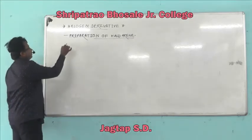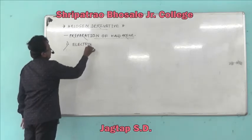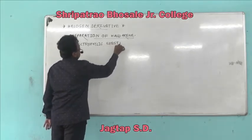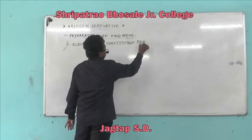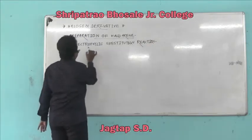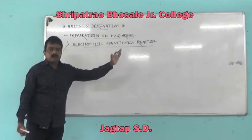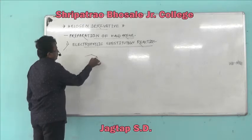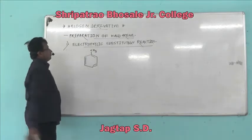First of all, we consider the Electrophilic Substitution Reaction. In the first method, Electrophilic Substitution Reaction of Monosubstituted Benzene. Monosubstituted benzene is the compound obtained by replacing only one hydrogen atom of benzene by only one atom or group.